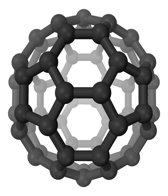Tholins formed at low pressure tend to contain nitrogen atoms in the interior of their molecules, while tholins formed at high pressure are more likely to have nitrogen atoms located in terminal positions. These atmospherically derived substances are distinct from ice tholins, which are formed instead by irradiation of clathrates of water and organic compounds such as methane (CH4) or ethane (C2H6). The radiation-induced synthesis on ice is non-dependent on temperature.